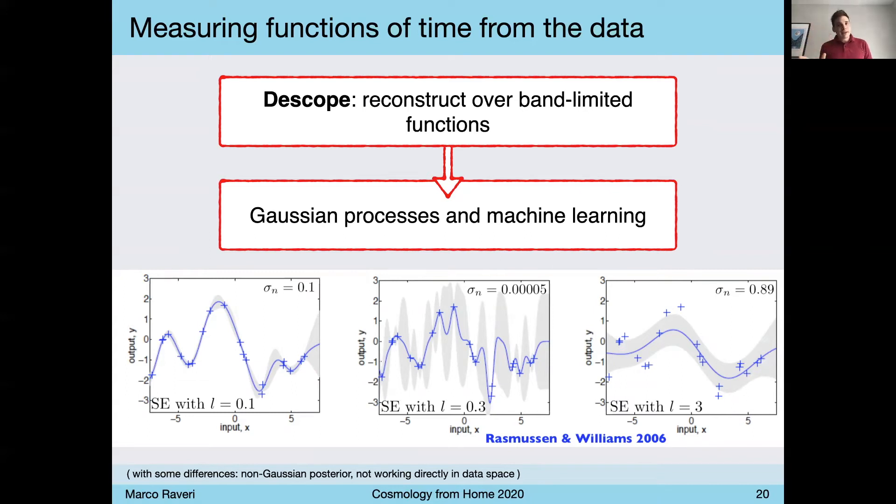Now, this is the idea behind Gaussian process regression and some machine learning techniques, with some slight differences in the sense that in this case, we are not working directly in data space, we are working in modified gravity space, and our data is very far from that. It's the CMB, the clustering of large scale cosmological structures. So there's a map between the two, and we have no expectation that the posterior of this function has to be Gaussian, as in Gaussian processes.